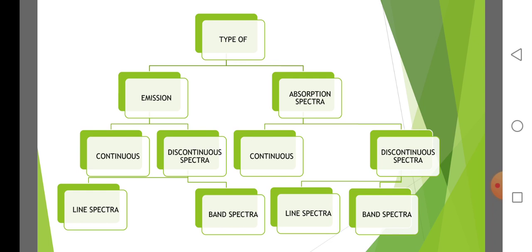Types of spectra. Spectra are classified into emission spectra and absorption spectra. Emission spectra are further classified into continuous spectra and discontinuous spectra. Discontinuous spectra are further classified into line spectra and band spectra. Absorption spectra are similarly classified into continuous and discontinuous spectra, with discontinuous further divided into line spectra and band spectra.